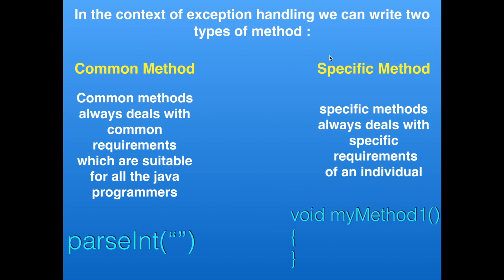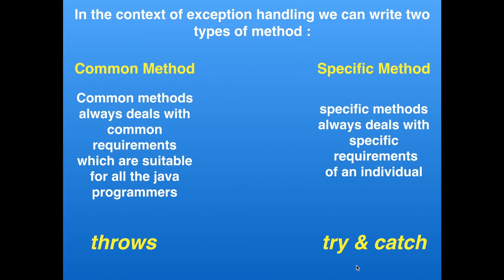Now we understand there are two types of developers: common method developers and specific method developers. If you are a common method developer and your method throws an exception, you need to express those exceptions using the throws keyword. Similarly, if you are a specific method developer and your method is used by end users and throws an exception, it is your duty to handle those exceptions using try-and-catch block.